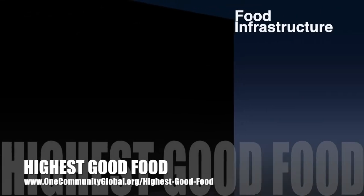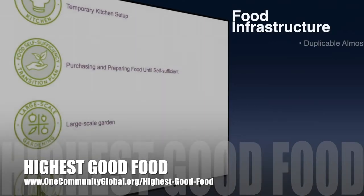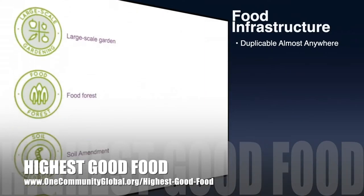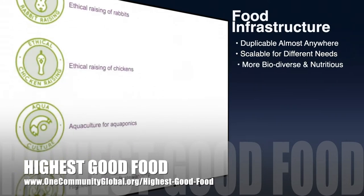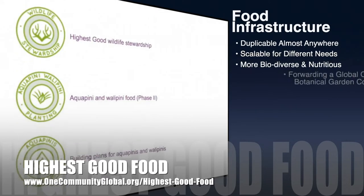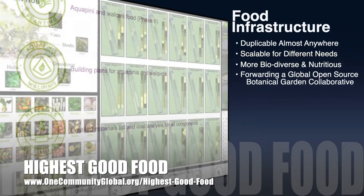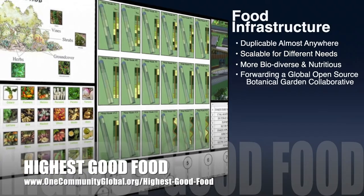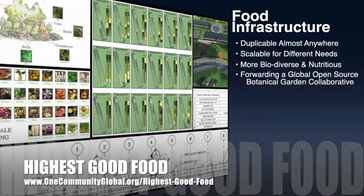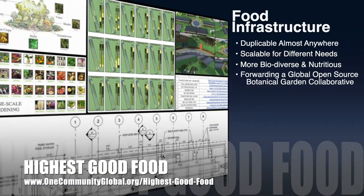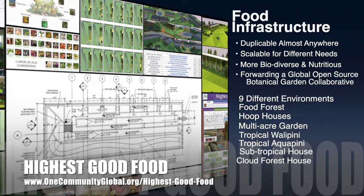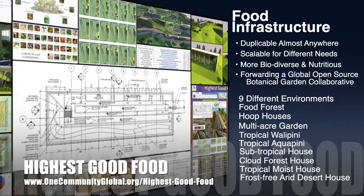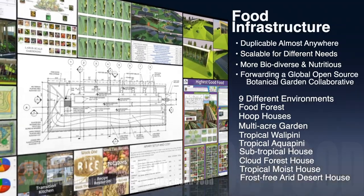One Community's approach to highest good food is duplicable almost anywhere, scalable for different needs, more biodiverse and nutritious, part of forwarding a global open source botanical garden collaborative, and includes nine different free shared and duplicable growing environments.